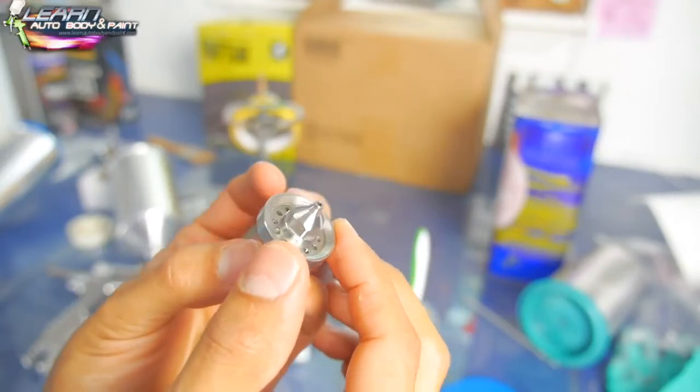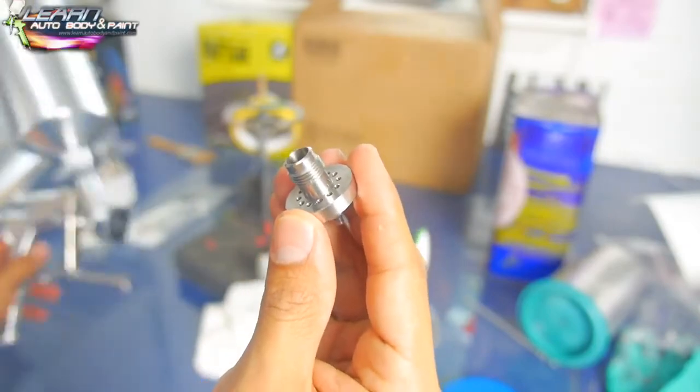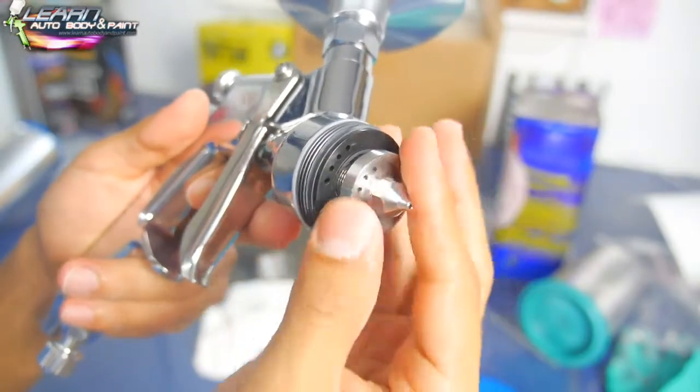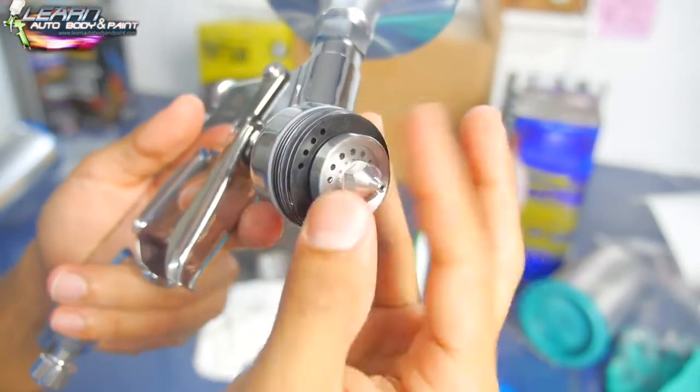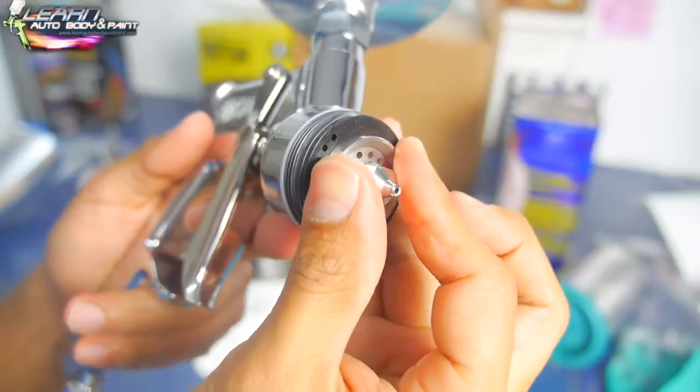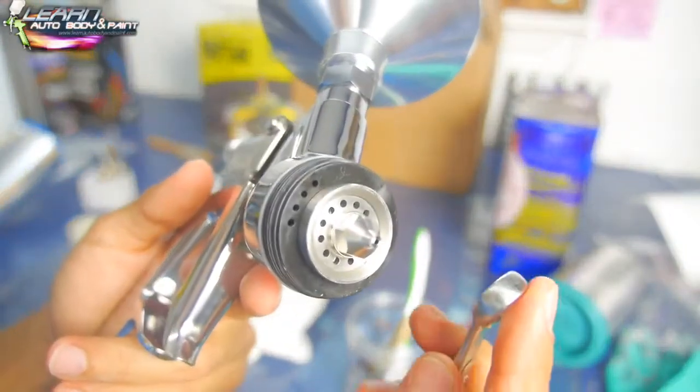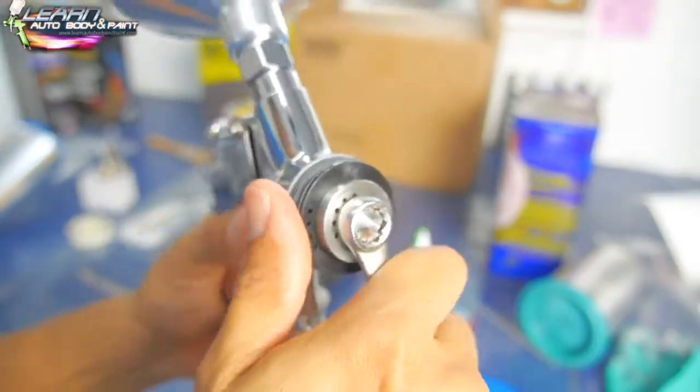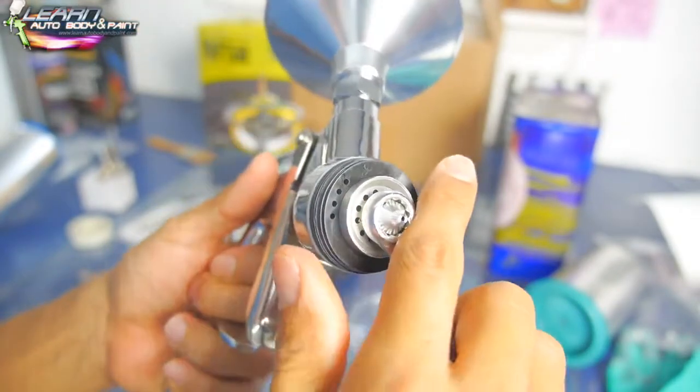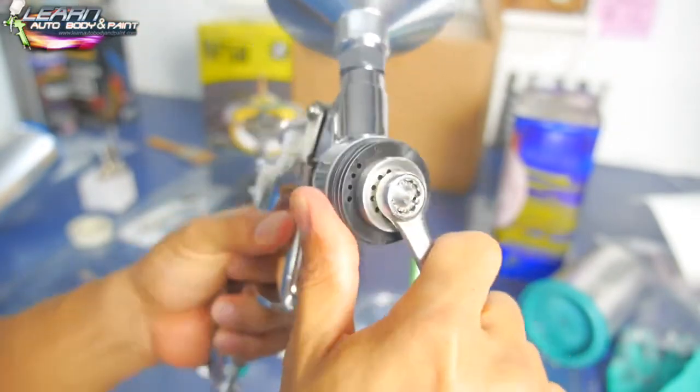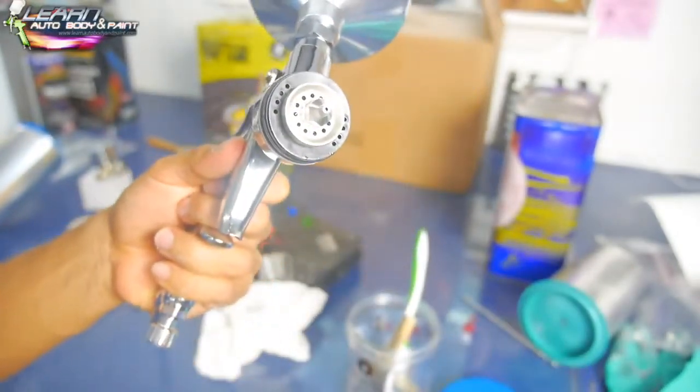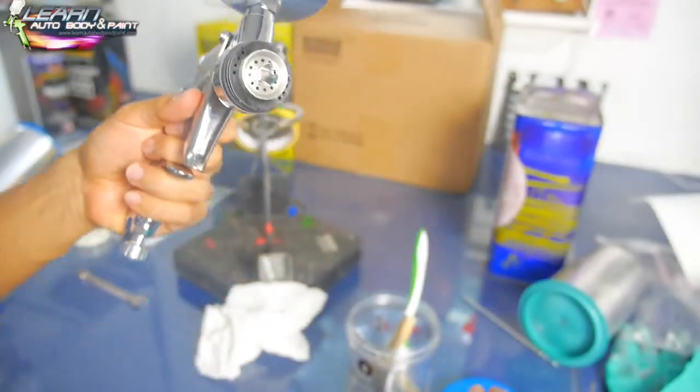We're going to go ahead and screw this back in, and when we tighten these, very lightly. We don't want to go crazy and strip it out. We're just going to tighten it by hand just enough. Then we're going to get our 10 millimeter and just give it a quick snug a little bit more, and that's it. You don't want to go crazy. Now we're going to put our needle back in.